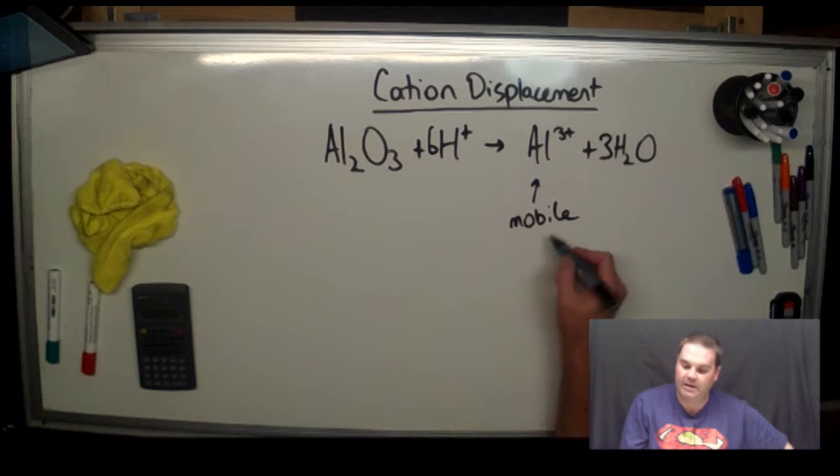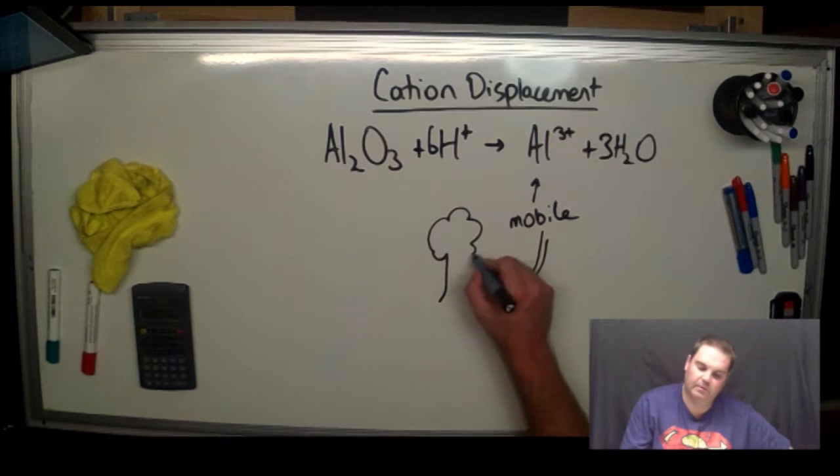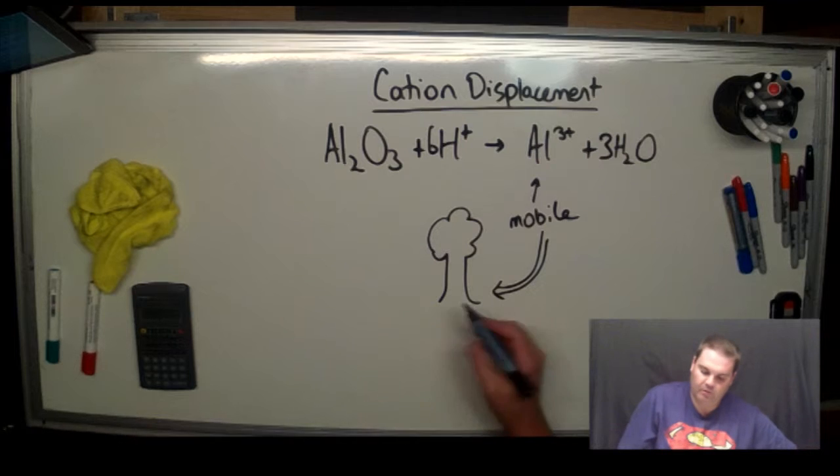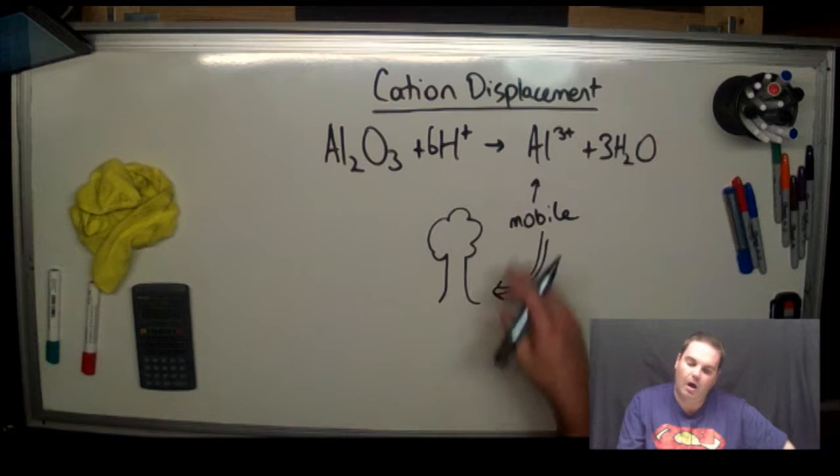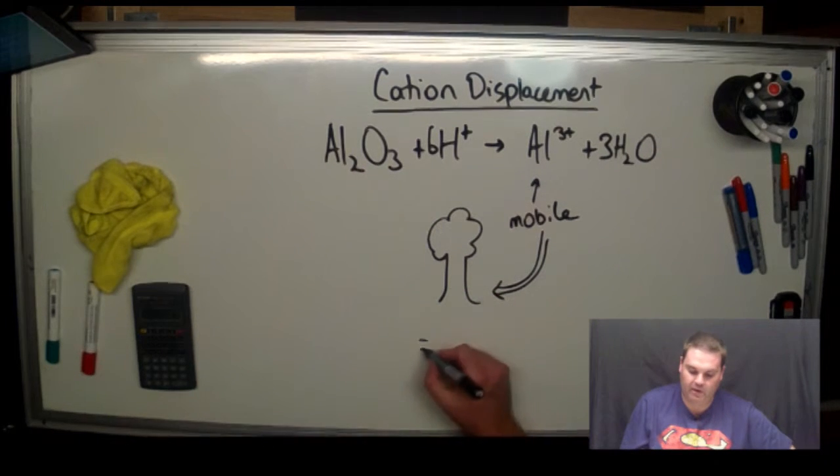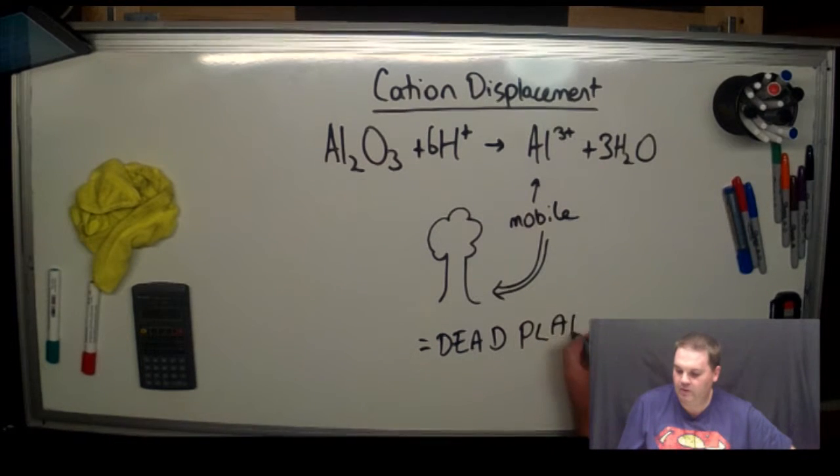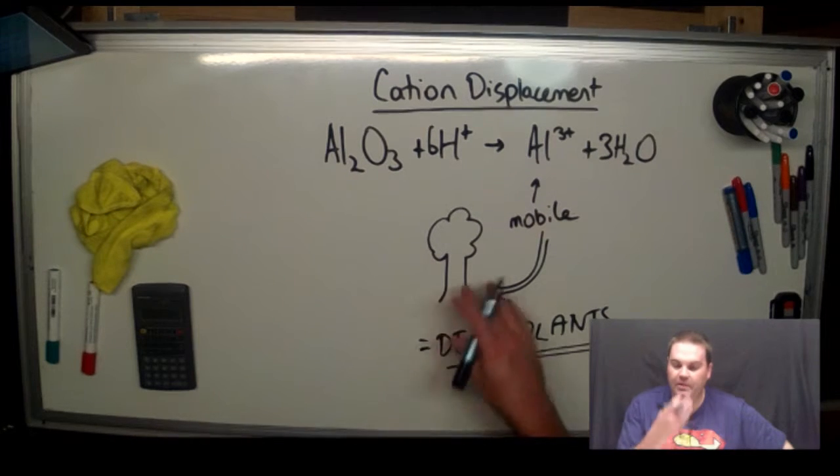These mobile aluminium ions are taken up by plants. Now, what that means is that plants normally need aluminium in a very small trace amount. High amounts of aluminium are actually toxic to plants, which kill them off. Equals dead plants. So that's not a good thing. We don't want to have all our plants being killed off.